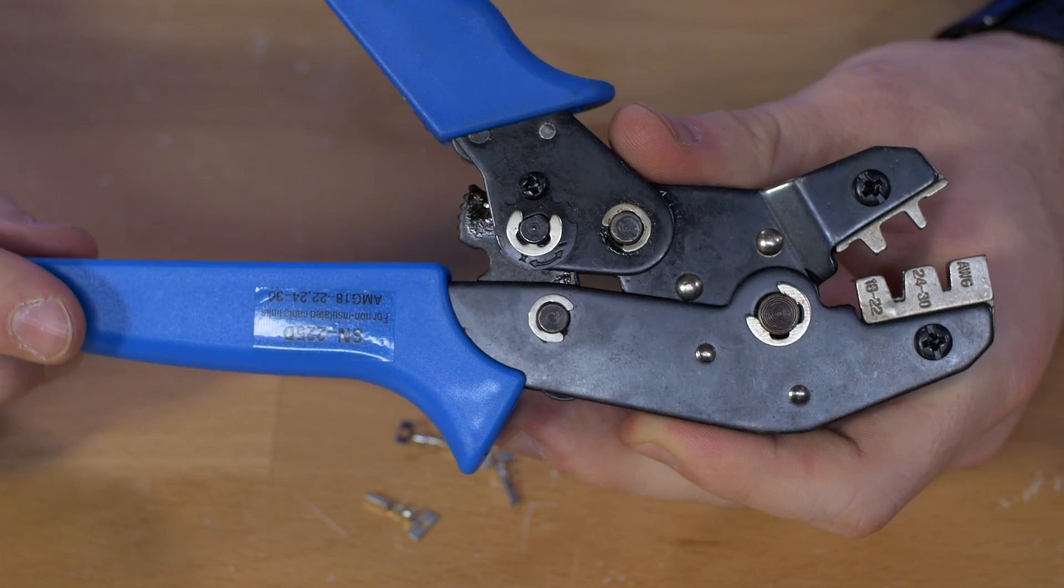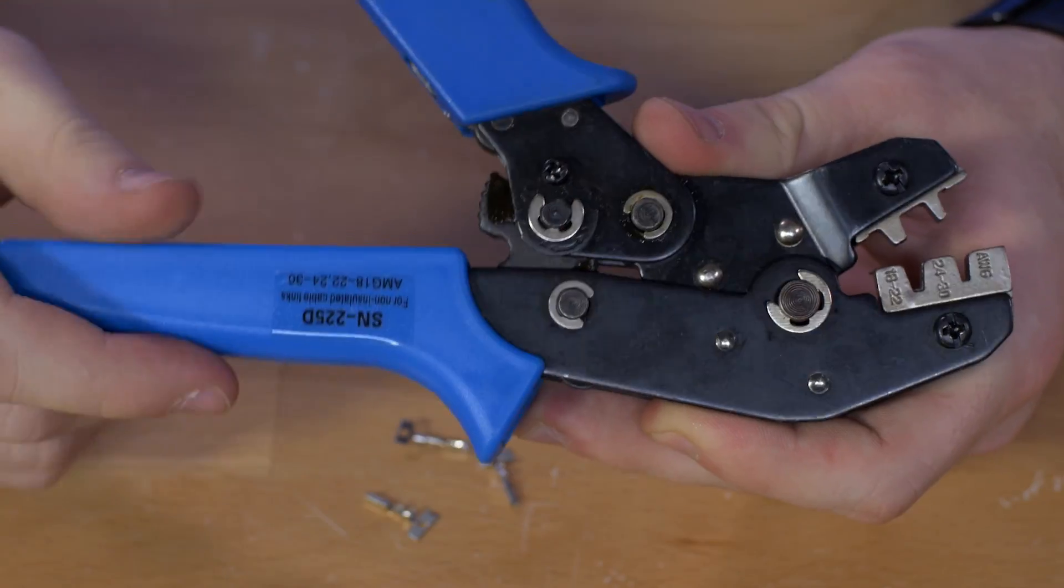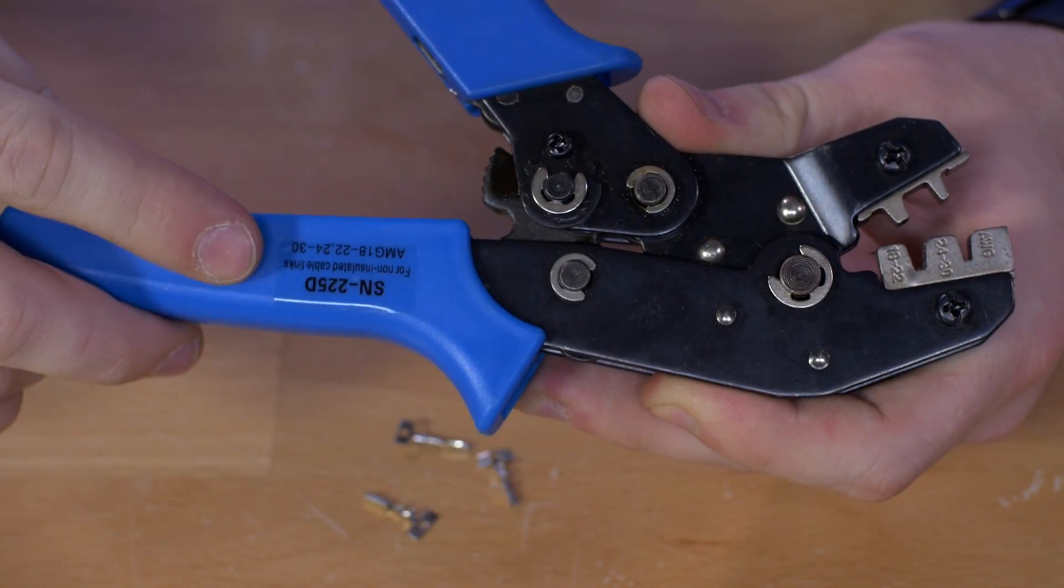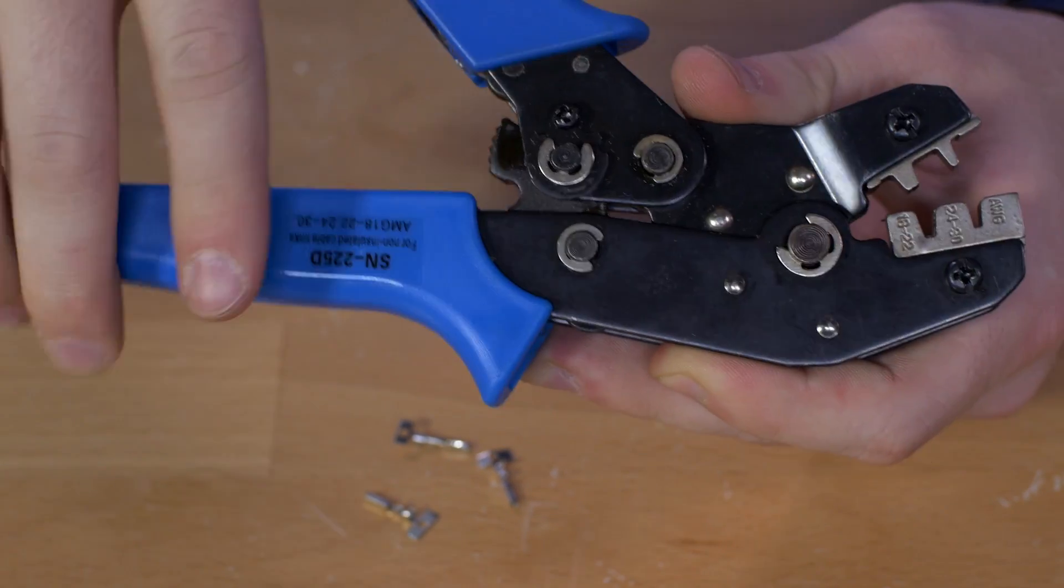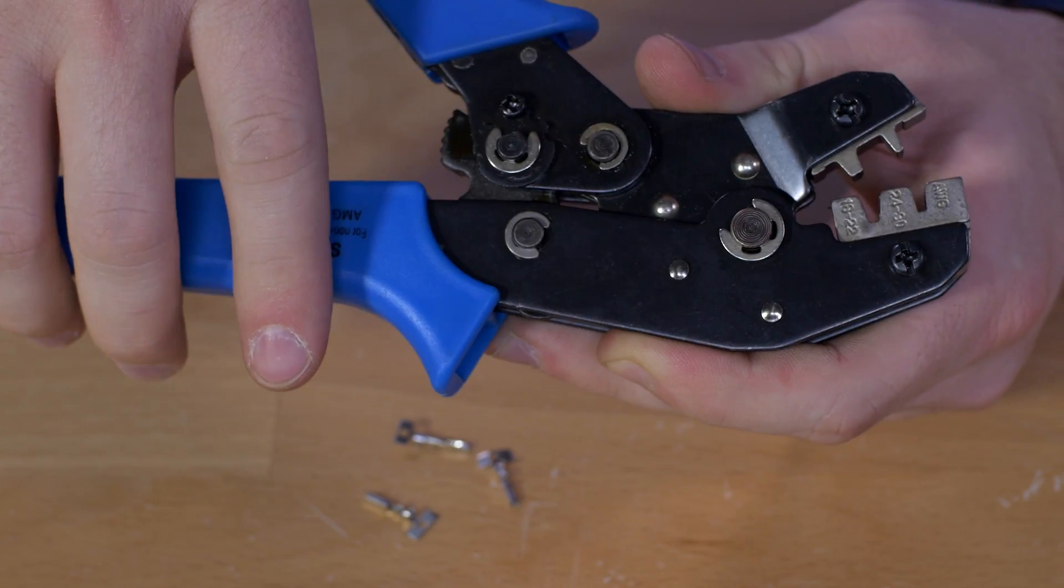Your pin crimpers have basically two parts. You've got this arm here that doesn't move at all, just a stationary piece, and then you've got the arm that you pull on and does the crimping.